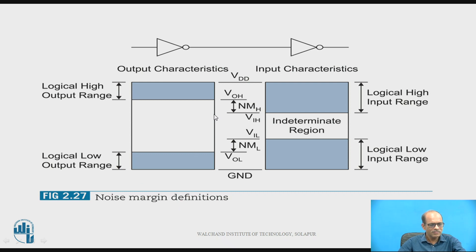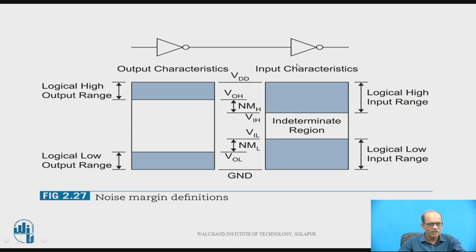When two inverters are connected in series as shown, the output characteristics of the first inverter are taken into consideration, and the input characteristics of the second inverter are taken into consideration for determining noise margin. This input and output characteristics of the inverter means input and output voltage levels. We are interested in voltage levels — input logic 1 and logic 0, meaning low-level input and high-level input, and similarly high-level output and low-level output.